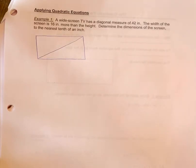All right, we're going to look at a word problem, applying quadratic equations here. A widescreen TV has a diagonal measure of 42 inches. The width of the screen is 16 inches more than the height. Determine the dimensions of the screen to the nearest tenth of an inch.